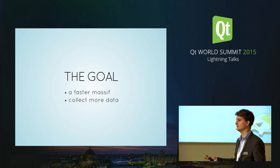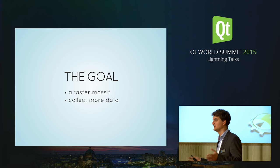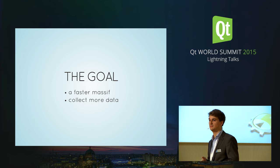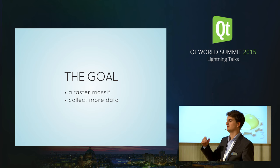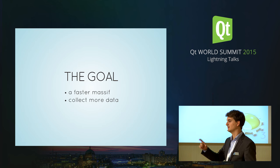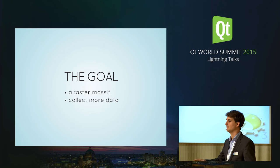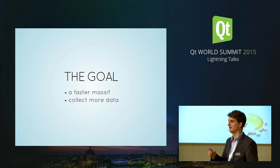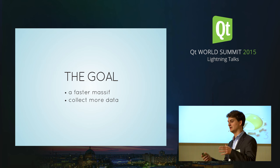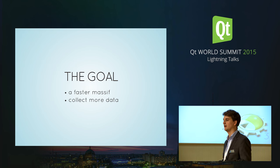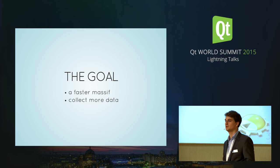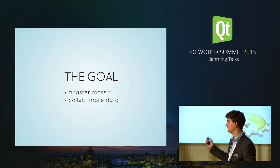If you look at the performance of nearly every Qt application, I bet you that in the top five hotspots you'll find malloc. Those are due to you using the Qt API in some way which is not optimal, leading to temporary allocations — and this tool will find that.